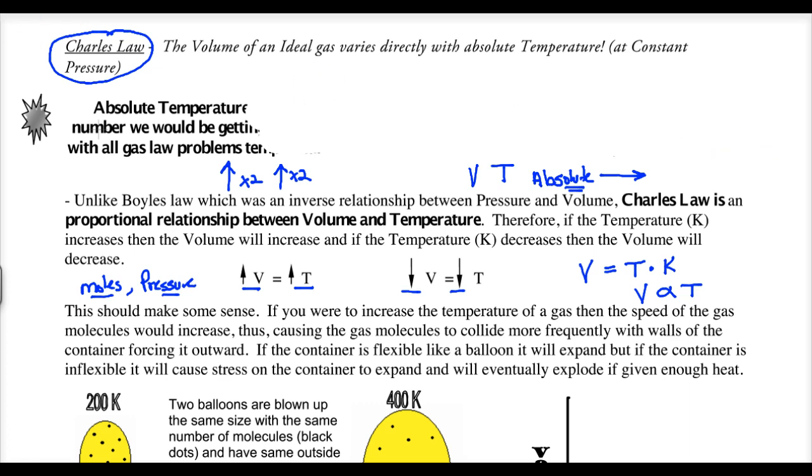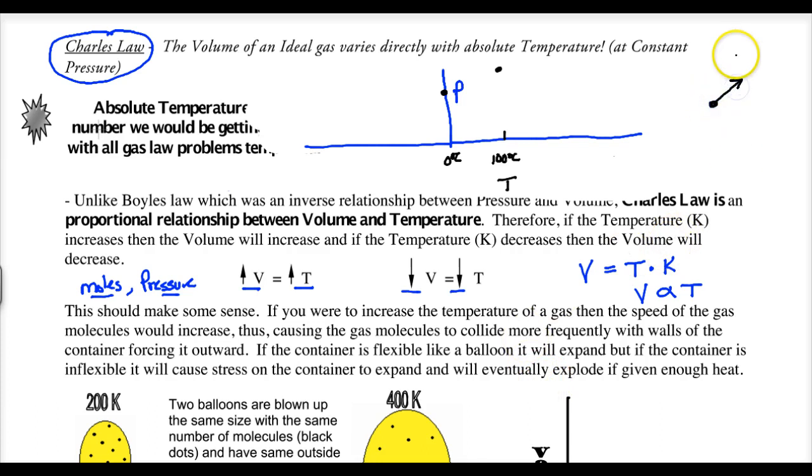You need a temperature scale that reflects the zero. So for instance, if I was to plot pressure with temperature, and if temperature is here, let's make this 100 degrees Celsius. We know the pressure, we know that we have a certain pressure value. At zero degrees Celsius, we know that pressure is not at zero. It is lowered because the temperature drops.